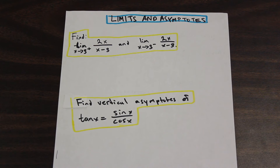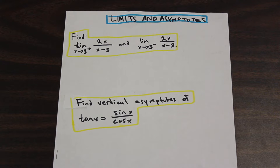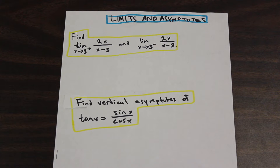Hey guys, Fred here from AF Math and Engineering. Today we're going to look a little bit into limits and asymptotes, vertical asymptotes specifically. Later we'll do more videos on other types of limits, horizontal asymptotes, and that kind of stuff. But this is just to give you an idea. I know a lot of people are confused about limits, when they exist and when they don't, and how to find a vertical asymptote.